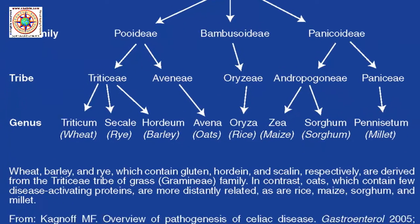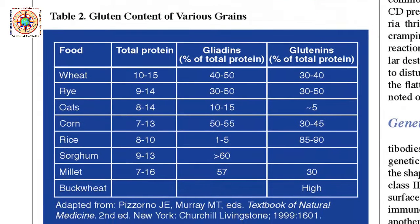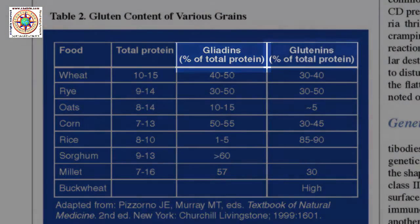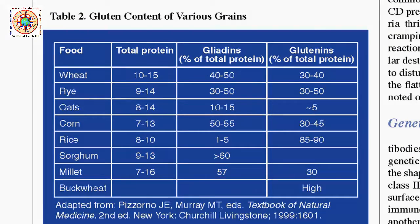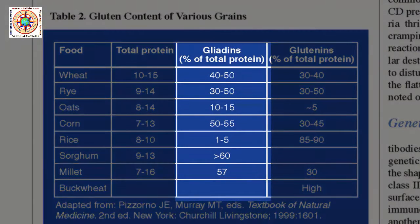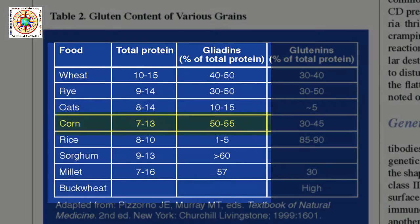The second figure on this page shows the gluten content of various grains. You can see that gluten is not a single protein, but a family of proteins which include gliadins and glutenins. Interestingly, it's not the glutenins but the gliadins that seem to be more of a problem. Of all these foods, wheat has one of the highest levels of gliadins. However, corn also has these gliadins, as does rye, oat, sorghum, and millet — though rice has only a small amount of the gliadin protein.